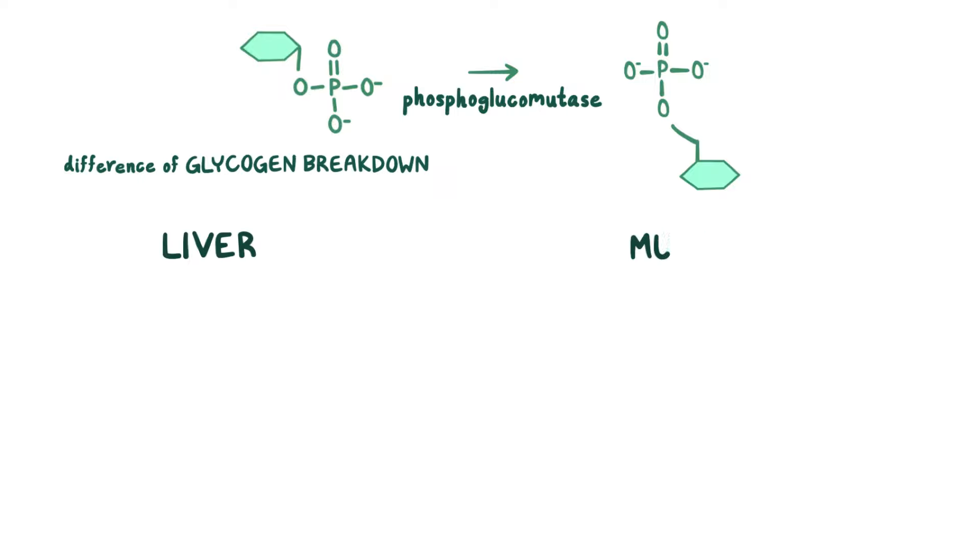So for each glucose that's removed via phosphorylase, there's a glucose-1-phosphate that gets liberated, and it's converted to glucose-6-phosphate by phosphoglucomutase. The difference between glycogen breakdown in the liver and what goes on in the muscles results from different enzymes in those two tissues.